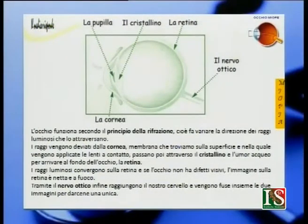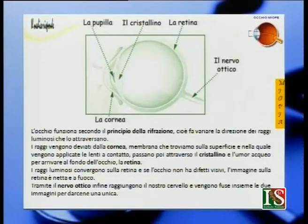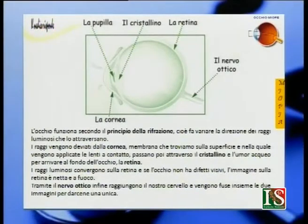L'occhio umano funziona secondo il principio della rifrazione, cioè fa variare la direzione dei raggi luminosi che lo attraversano. I raggi vengono deviati dalla cornea, membrana che troviamo sulla superficie e nella quale vengono applicate le lenti a contatto. Passano poi attraverso il cristallino e l'umore acqueo per arrivare al fondo dell'occhio, cioè la retina. I raggi luminosi convergono sulla retina e, se l'occhio non ha difetti visivi, l'immagine è netta e a fuoco. Tramite il nervo ottico, infine, raggiungono il nostro cervello e vengono fuse insieme le due immagini per darcene una unica.